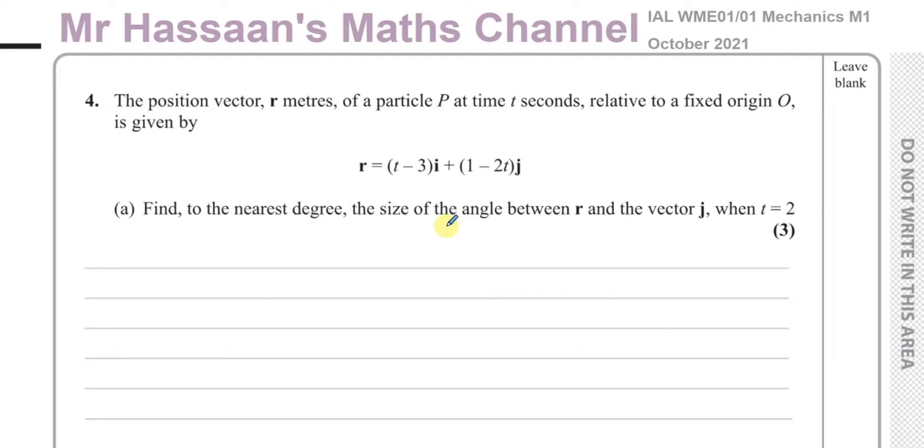plus (1 minus 2t)j. Find to the nearest degree the size of the angle between r and the vector j when t equals 2. So when t equals 2...